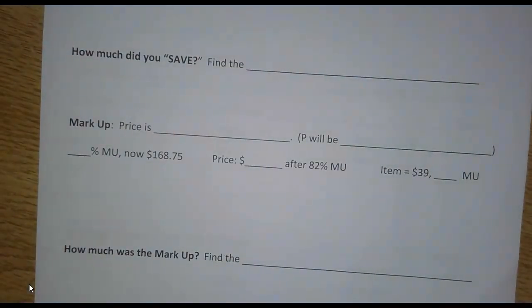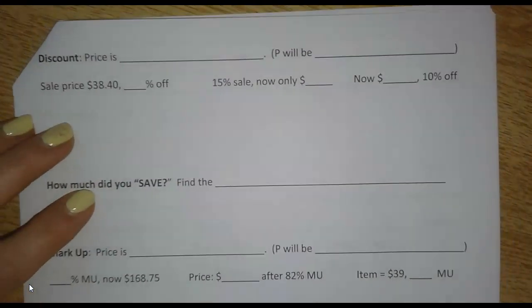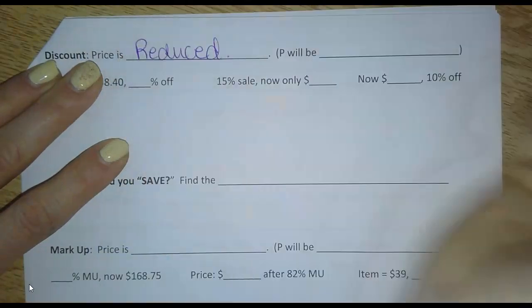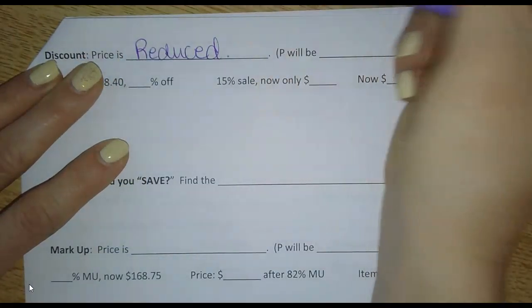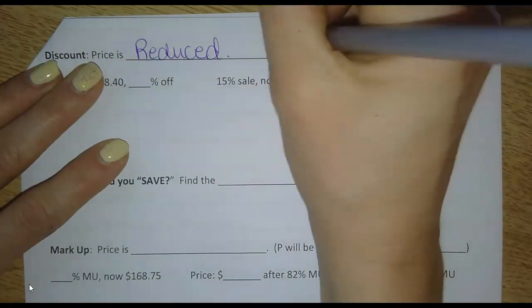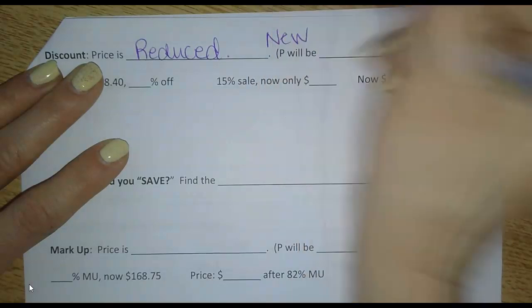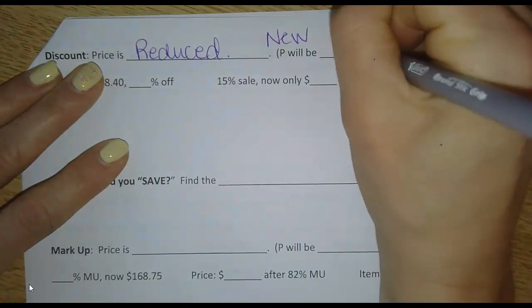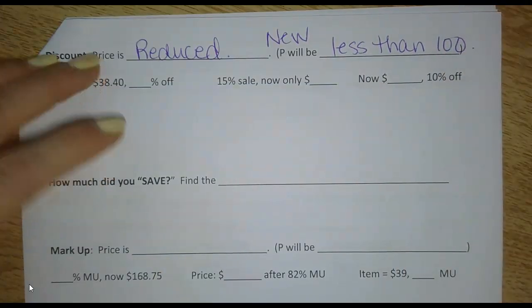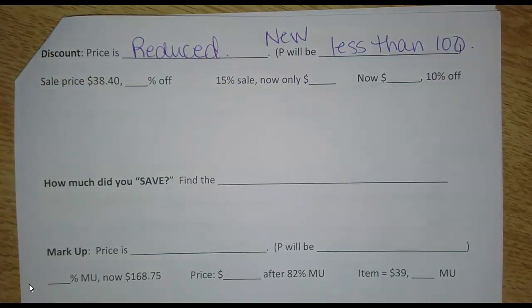So now we're going to look at some problems with money. If you're at the store buying something. Discount. A discount means the price is reduced. This could be on sale or clearance or a coupon. And what's important to recognize here is that the P, the new P, new percent that you put into your work, will be less than 100% because it went down. There's a reduction in the price. You're paying less than the full amount.